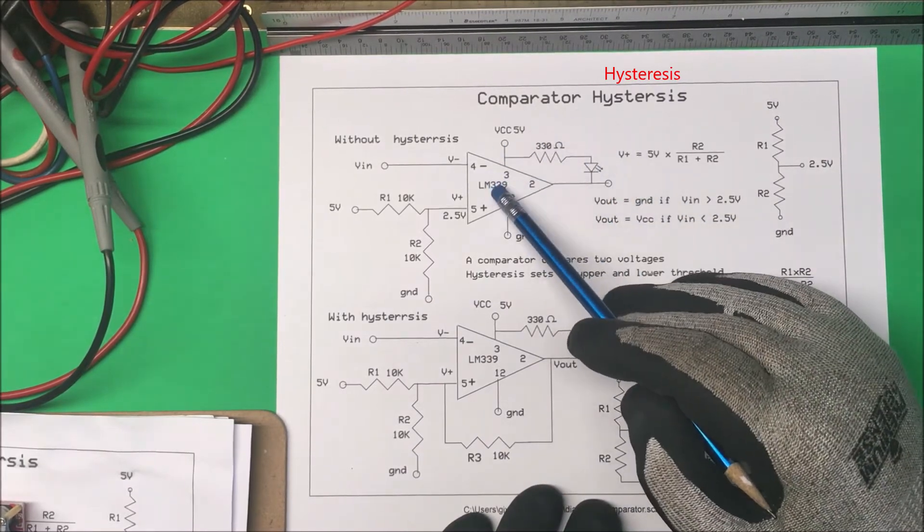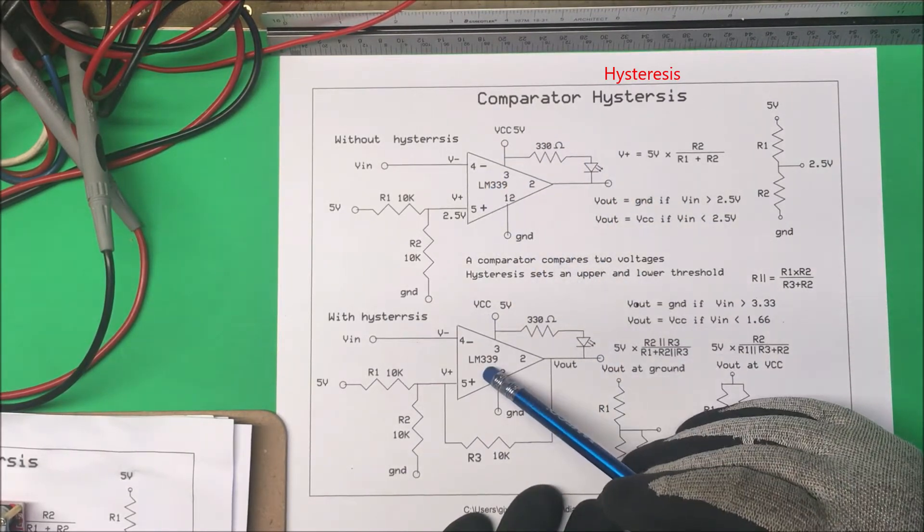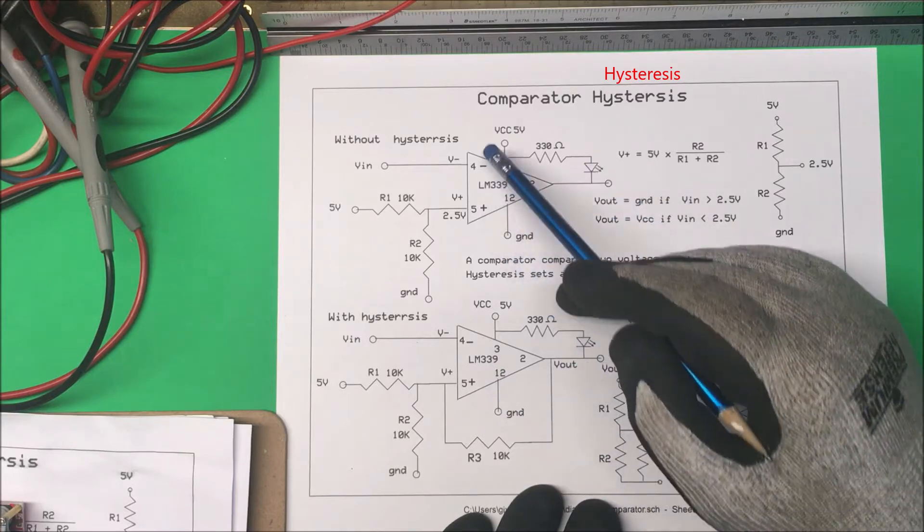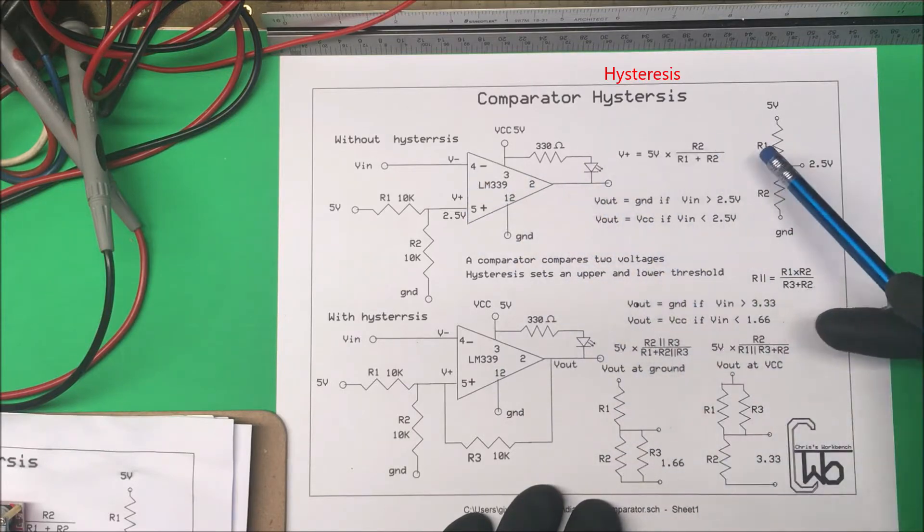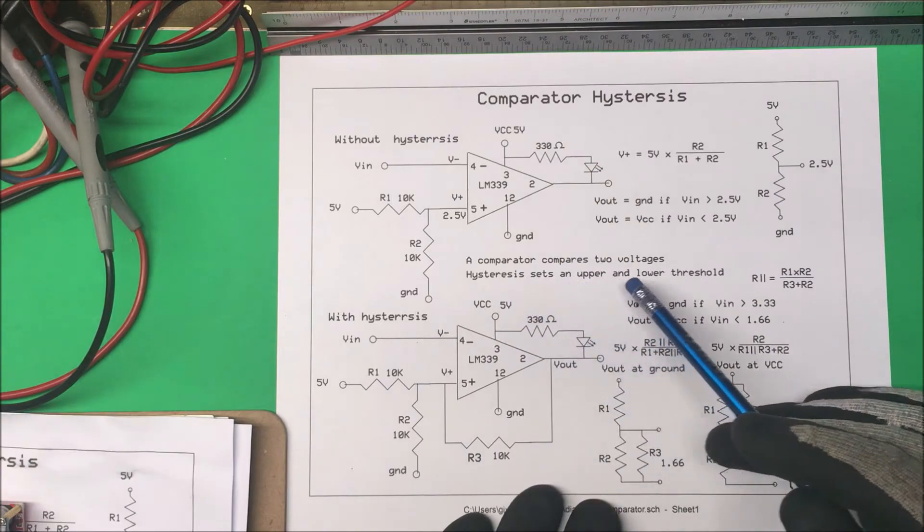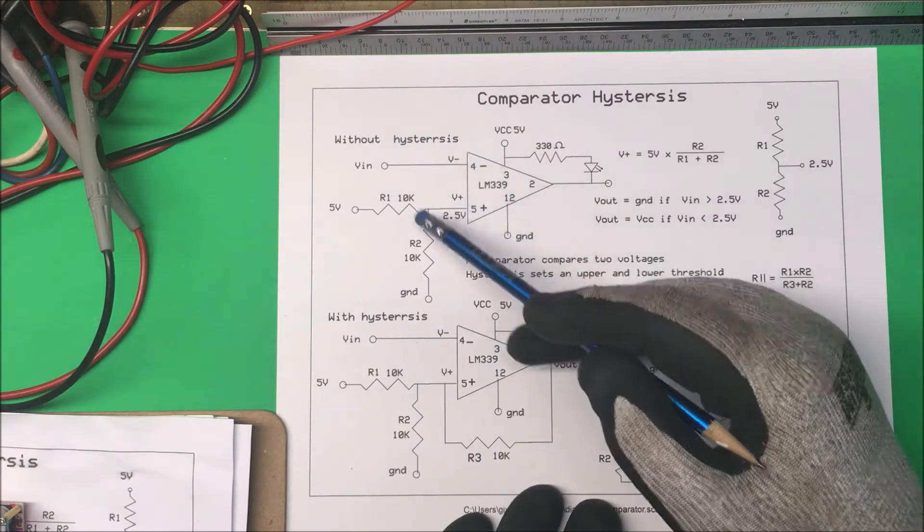Let's take a look at a comparator, one without hysteresis and one with hysteresis. Now a comparator just compares two different voltages and changes the output accordingly. Then hysteresis sets the upper and lower threshold.